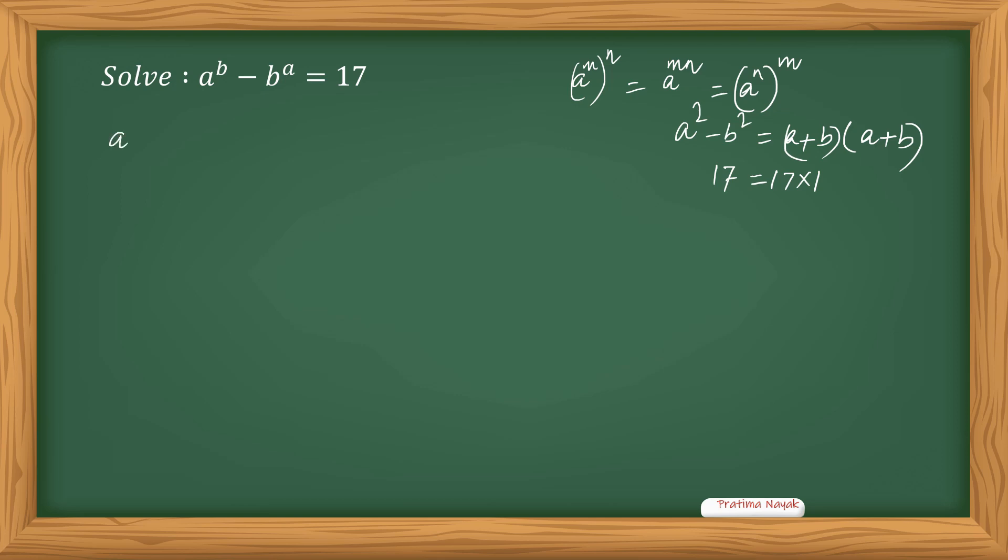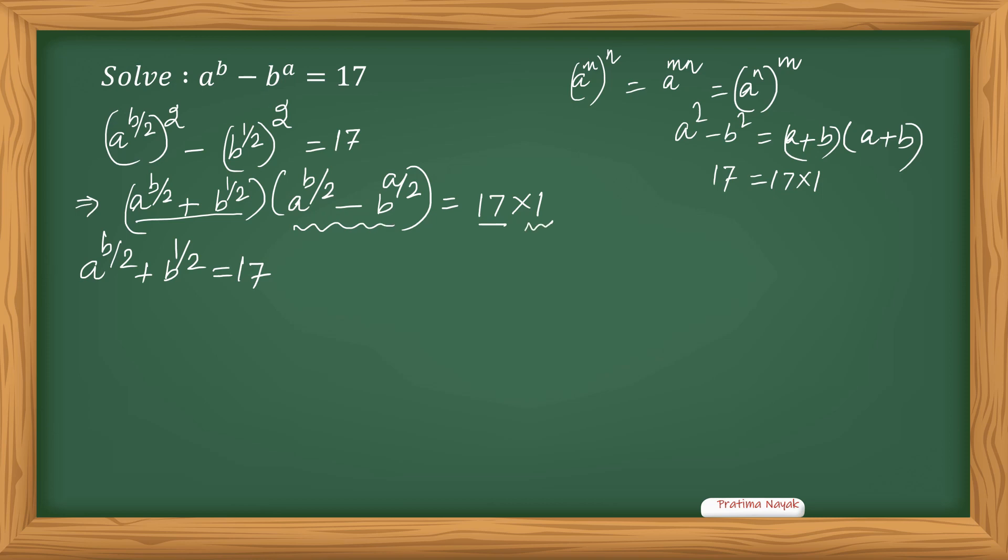So first, I will write (a^(b/2))² minus (b^(a/2))² equals 17. So in the next line, I will factorize: (a^(b/2) + b^(a/2)) times (a^(b/2) - b^(a/2)) equals 17 times 1. And here this one is certainly bigger than the second one. So I will compare as 17 and this is 1.